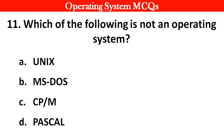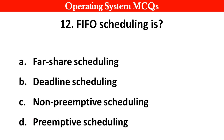Next question: Which of the following is not an operating system? Options: A. Unix. B. MS-DOS. C. CPM. D. Pascal. Right answer is option D: Pascal.